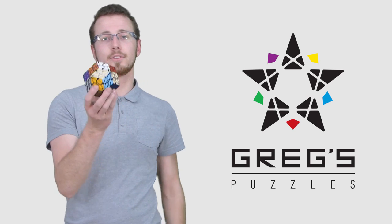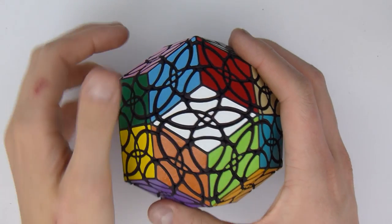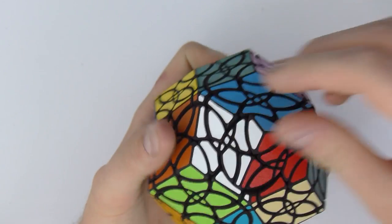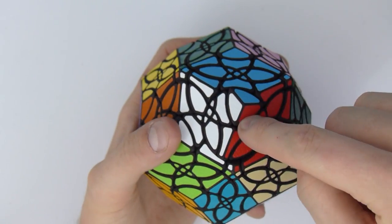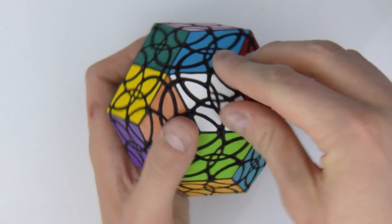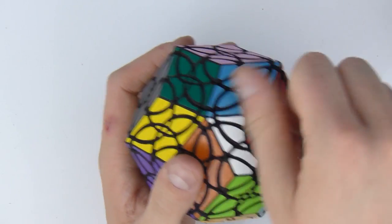This is the edge-turning rhombic tricontahedron, or ETRT. It has 60 axes of rotation. I'm calling these axes because the rotation is not around the faces. There are 30 faces and 60 axes, so an average of 2 axes per face.